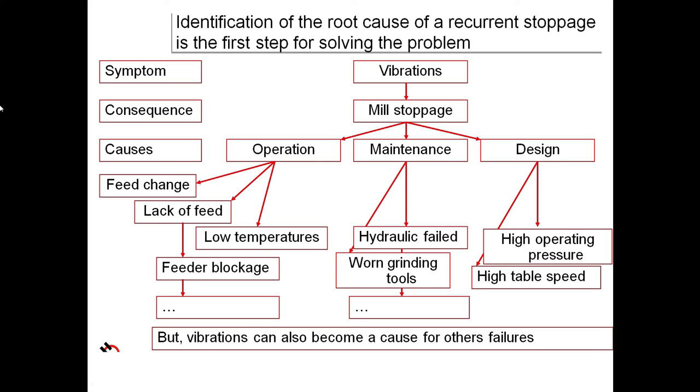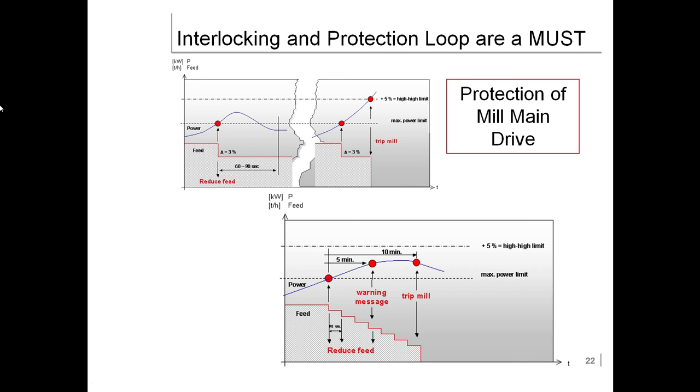Identification of the root cause of recurrent stoppage is the first step for solving the problem. Symptoms include vibrations leading to mill stoppage. Consequences: mill stoppage. Causes are categorized by operation (feed change, lack of feed, low temperatures, feeder blockage), maintenance (hydraulic failure, worn grinding tools), and design (high operating pressure, high table speed). But vibrations can also become a cause of other failures, affecting interlocking and production. You can see the complete diagnostic graph.